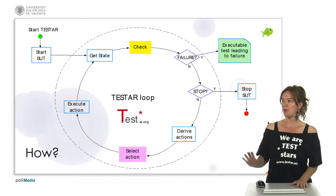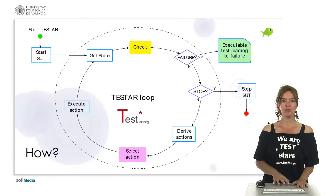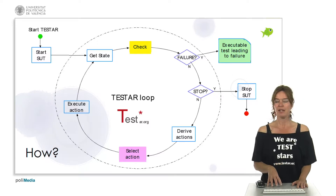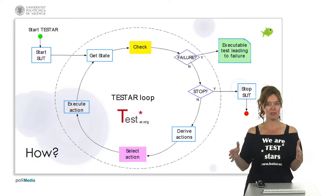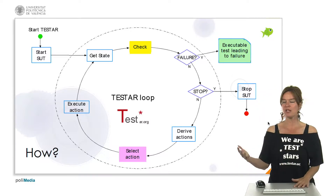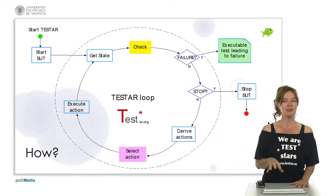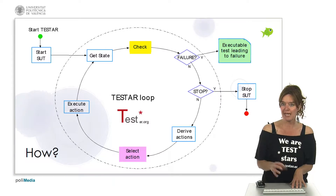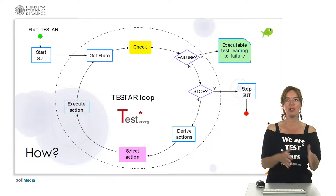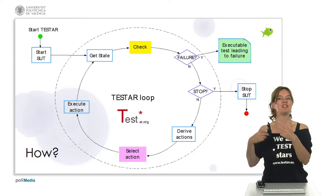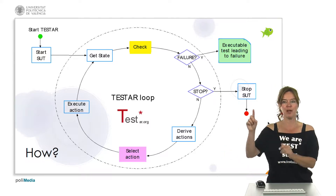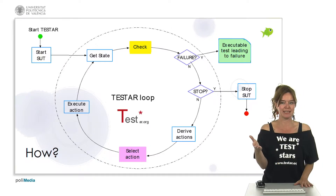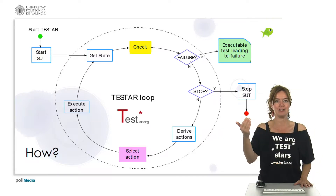So this was the TestStar loop - just to remind you: we get the state, we check whether the state is correct, if we find a failure we have a test sequence leading to failure, if not and we want to go on testing we derive actions in that specific state, we select one of those actions at random, we execute it and we go to the next state. That can again be checked for failures and if there's no failures we can go on in the loop of derive actions, select action, execute, get state, check state, etc.